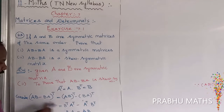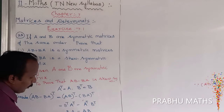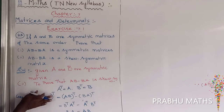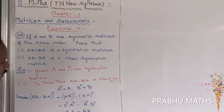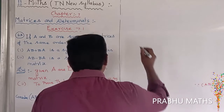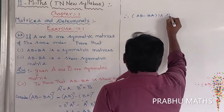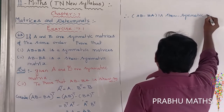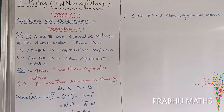Taking minus outside: BA minus AB equals minus of AB minus BA. Therefore, AB minus BA whole transpose equals minus of AB minus BA. This proves that AB minus BA is a skew-symmetric matrix.